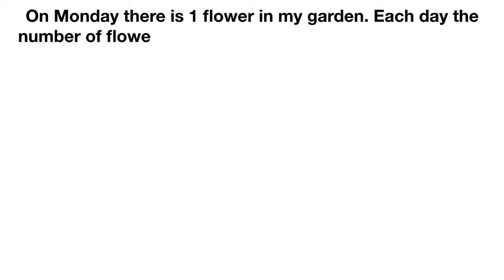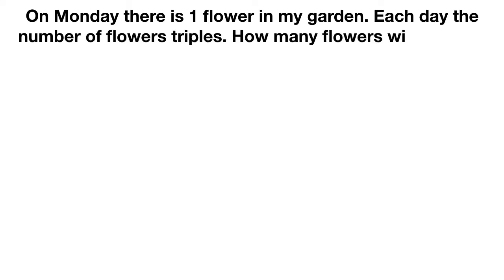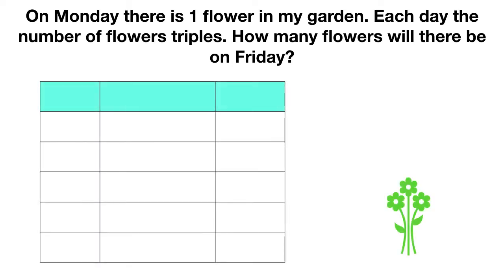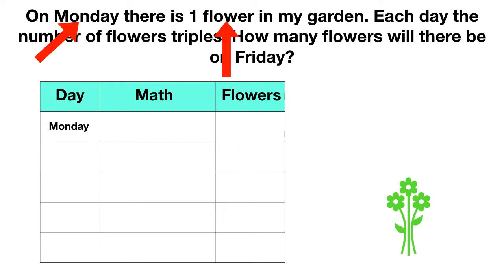Let's do one of these together. On Monday, there is one flower in my garden. Each day, the number of flowers triples. How many flowers will there be on Friday? We know the number changes each day, and each day we'll have to do some math. On Monday, the problem tells us there is one flower, so the answer is just one flower.